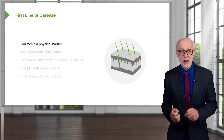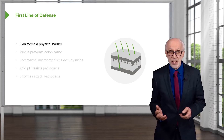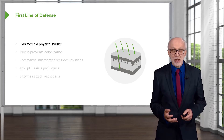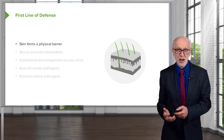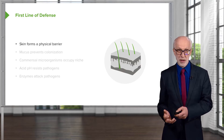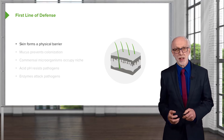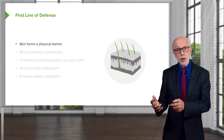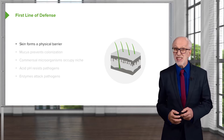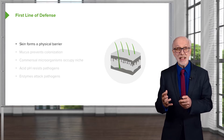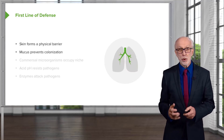Before the immune system actually comes into play, we have many different defenses that are not, strictly speaking, part of the immune system. We call these the first lines of defense. For example, the skin, which forms a physical barrier. If you have damage to the skin, there are two major problems: one is fluid loss, but the second is infection. This tells us very clearly that the skin is really an important part of protecting us from infection.